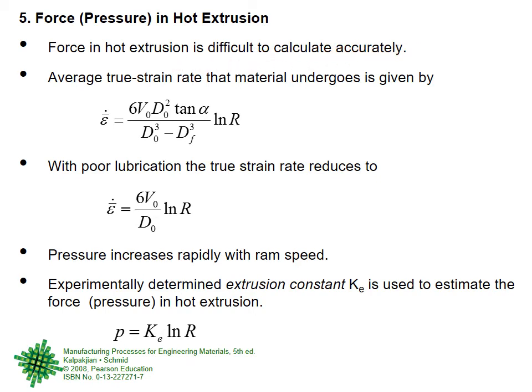Force in hot extrusion is difficult to calculate accurately — that is a very deep statement. In hot extrusion, the billet is preheated in billet preheating ovens before entering the extrusion chamber. The dies are preheated in a die preheating oven so the die is already at temperature when loaded. The extrusion chamber itself is maintained at the target temperature — 400, 450, 500°C and so on. So the whole die set (die, die backer, bolster) is preheated, making things quite complicated.